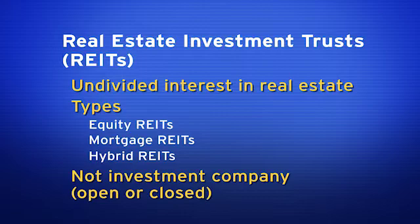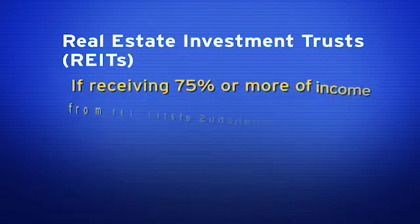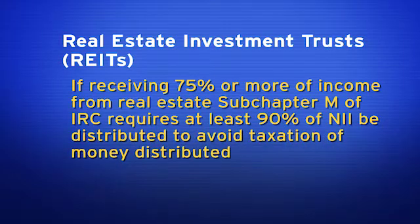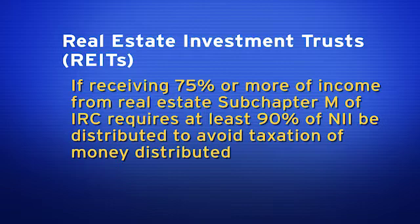If receiving 75% or more of income from real estate, Subchapter M of the Internal Revenue Code, the IRC, requires at least 90% of net investment income be distributed to avoid taxation of money distributed. So if the real estate investment trust distributes at least 90% of the trust's net investment income, the monies distributed would be taxed to the investors, taxed to the shareholders — not the REIT, not the trust.